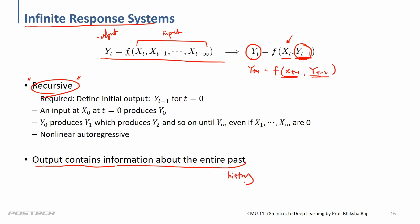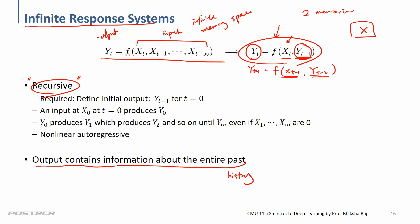In theory, the output contains information about the entire past — the entire history. For the infinite memory approach we need infinite memory space. But for the recursive approach, we only need two memories: one for the input and one for the previous y. Each time we read the values, do some computation, and update it. With recursion we don't need that much memory space.